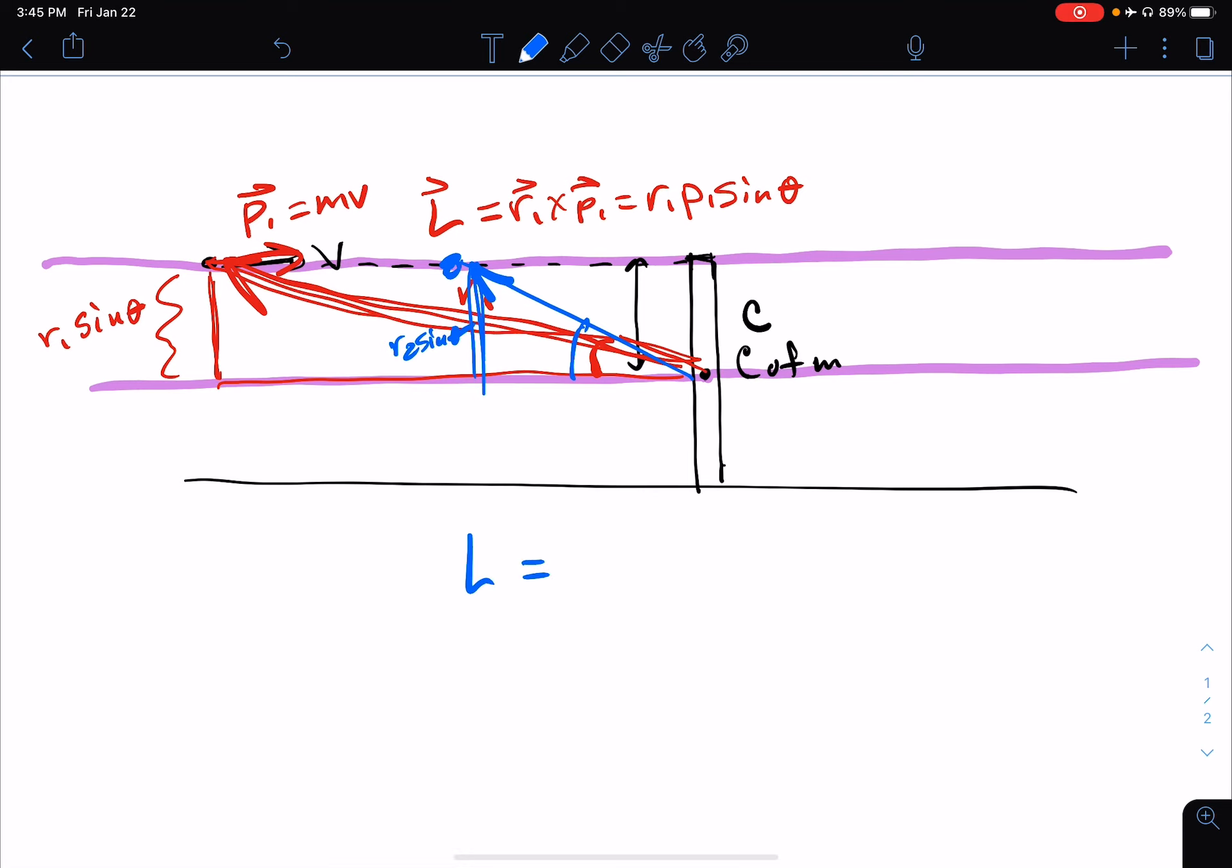So we could actually write the angular momentum as R sine of theta, the component of R that's up and down, times the momentum. Instead of writing it as R, P sine of theta, we could think of this as the distance between those two purple lines. The momentum is not changing, this is a constant. And for any given point, sine of theta might be changing, but so would R. So R sine of theta, that's also a constant.